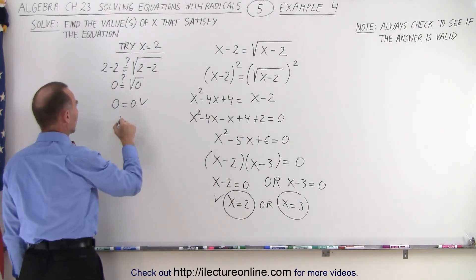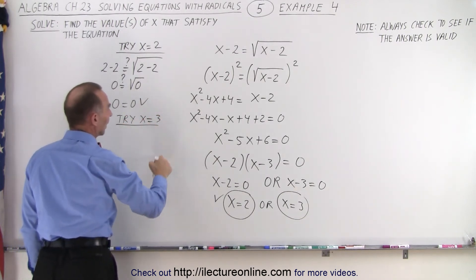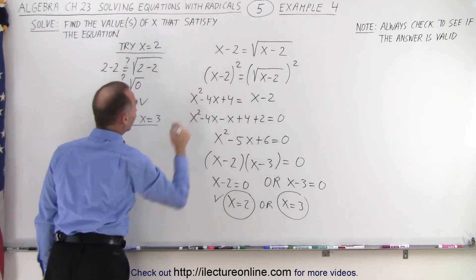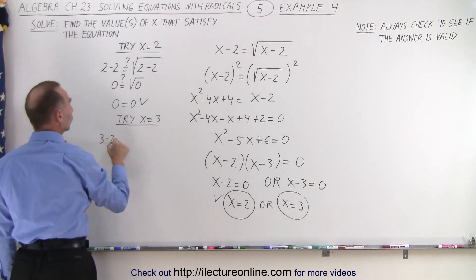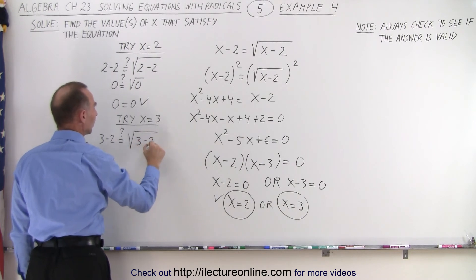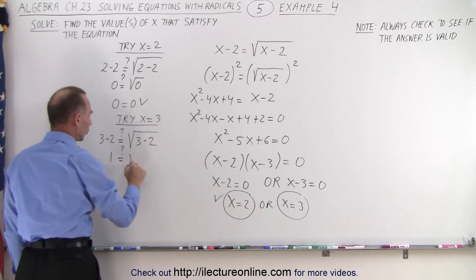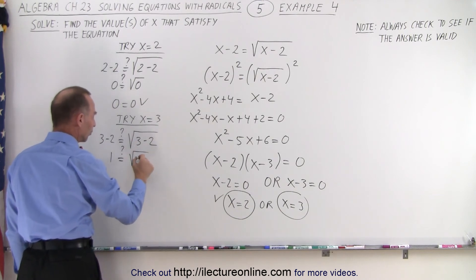How about x equals 3? Try x equals 3. And again, we're going to plug in a 3 for every x. So that gives us 3 minus 2. Is that equal to the square root of 3 minus 2? On the left side we get 1. And is that equal to the square root on the right side, which 3 minus 2 is also 1.